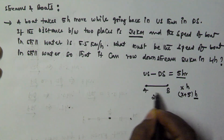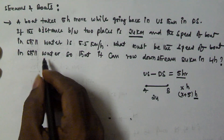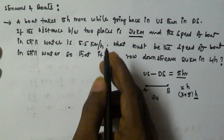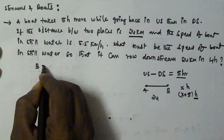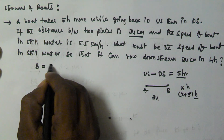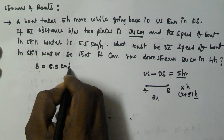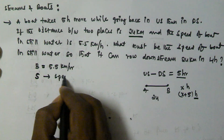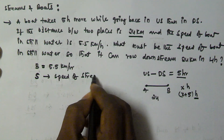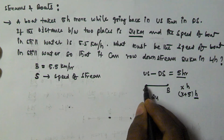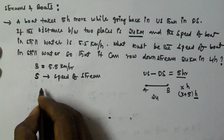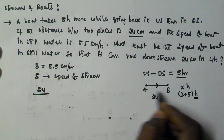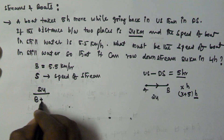Let us assume that the speed of the boat in still water, b, is given as 5.5 km per hour. And let s be the speed of the stream. The time taken to travel from A to B — the distance is 24 — so the time is 24 divided by the downstream speed, which is boat speed plus stream speed, i.e., b plus s.